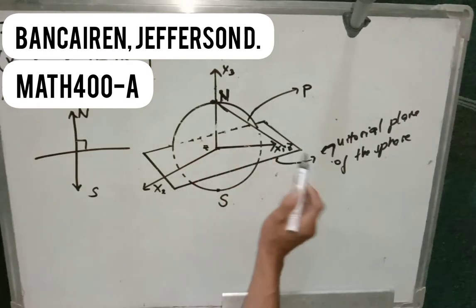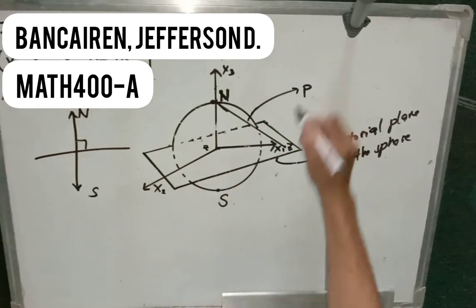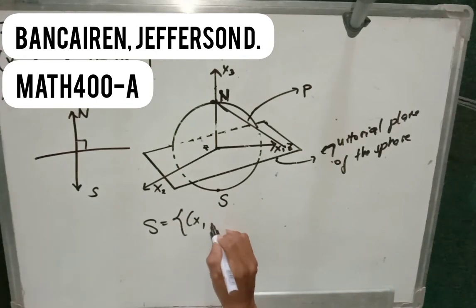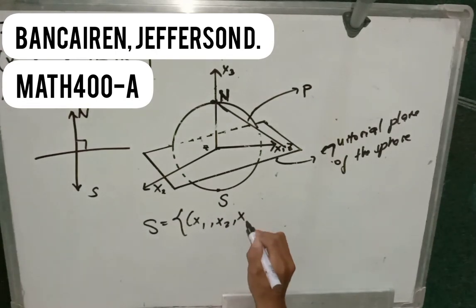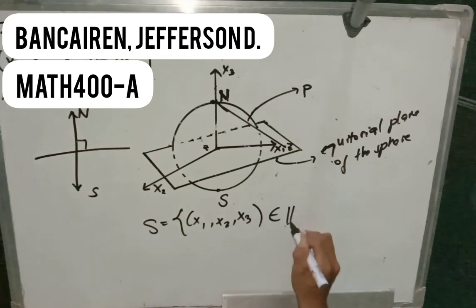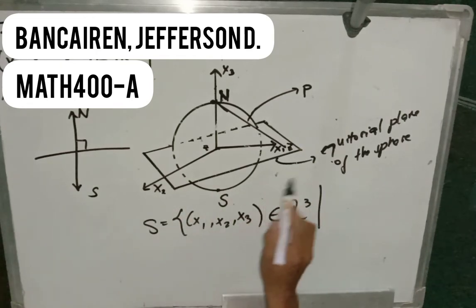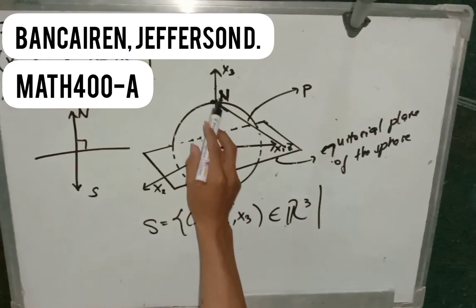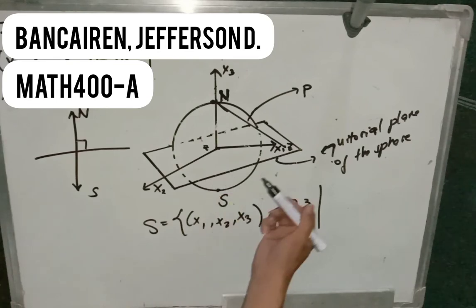So, and the coordinate of this point, obviously, we will denote as S equals X sub 1, comma X sub 2, comma X sub 3, which is an element of R3, such that we know that the coordinate of this line, that is N to Z, on the sphere...